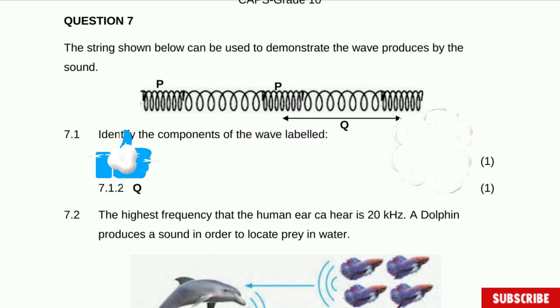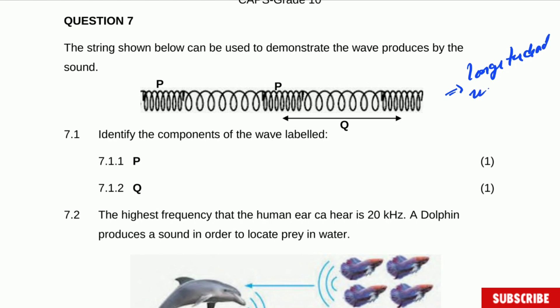This question says the string shown below can be used to demonstrate the wave produced by sound. It's a string but it's the same type of wave that is in sound. Now identify the components of the wave label — and you need to know that this one is a longitudinal wave. So in this case we'll have compression and rarefaction.